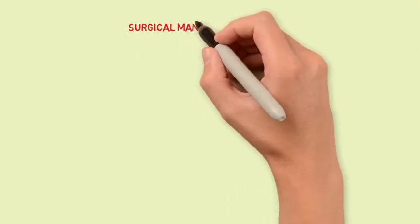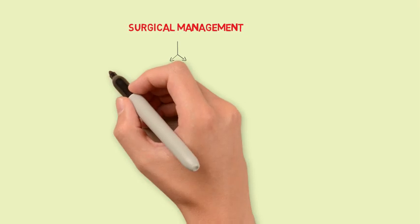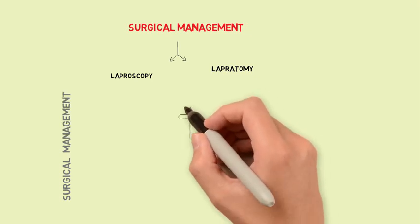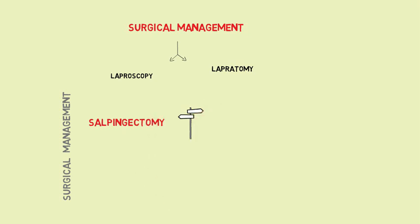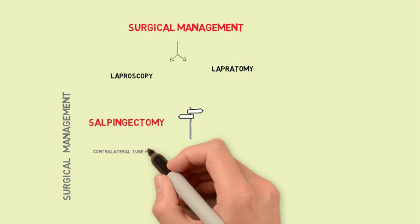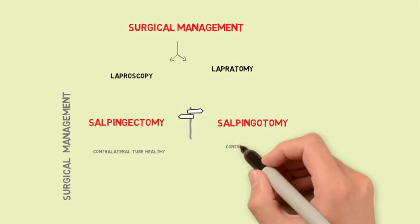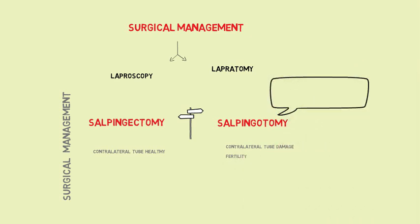Regarding surgical management of ectopic pregnancy, there are two options. Laparoscopy is the preferred option over open surgery. The two surgical options are salpingectomy, which means removal of the whole tube, or salpingotomy, which is opening only part of the tube without removing it. Salpingectomy should be performed in the presence of a healthy contralateral tube, and salpingotomy is done if the contralateral tube is damaged and the woman desires future fertility.